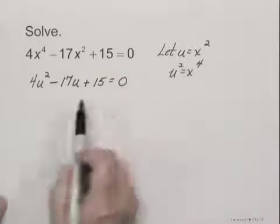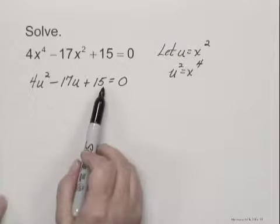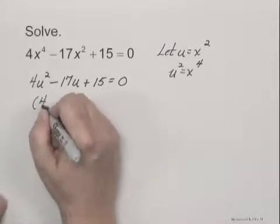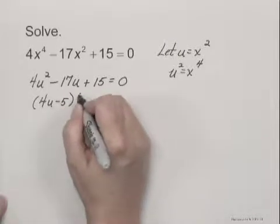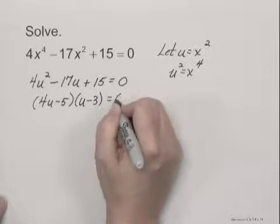And this lets us write it as a quadratic equation, which we can factor and solve. We have 4u minus 5 times u minus 3 equals 0.